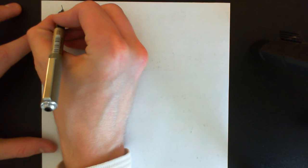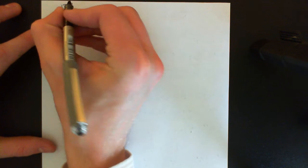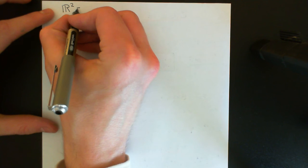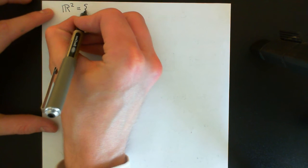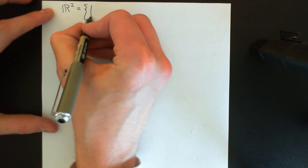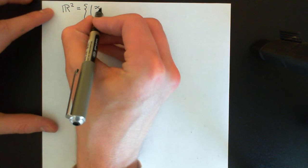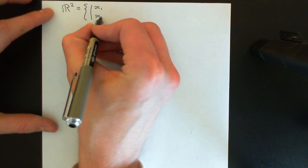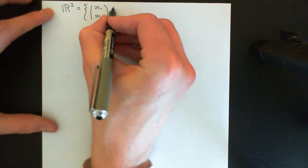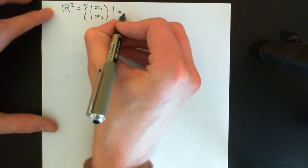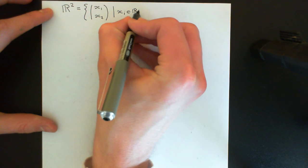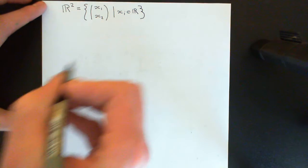Let's end with an example. We'll use our old friend R². This is a very intuitive example. R² consists of all pairs of real numbers X1 and X2, where the Xi are elements of the real numbers.